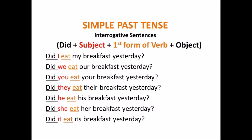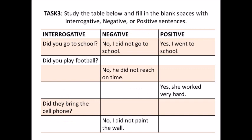For interrogative sentences, or questions, we use did at the beginning of the sentence, followed by subject + first form of the verb + object. For example: Did I eat my breakfast? Did we eat? Did you eat? Did they eat? Did he eat? Did she eat? Did it eat? Here comes the third and last task for today's lesson. Study the table below and fill in the blank spaces with interrogative, negative, or positive sentences.